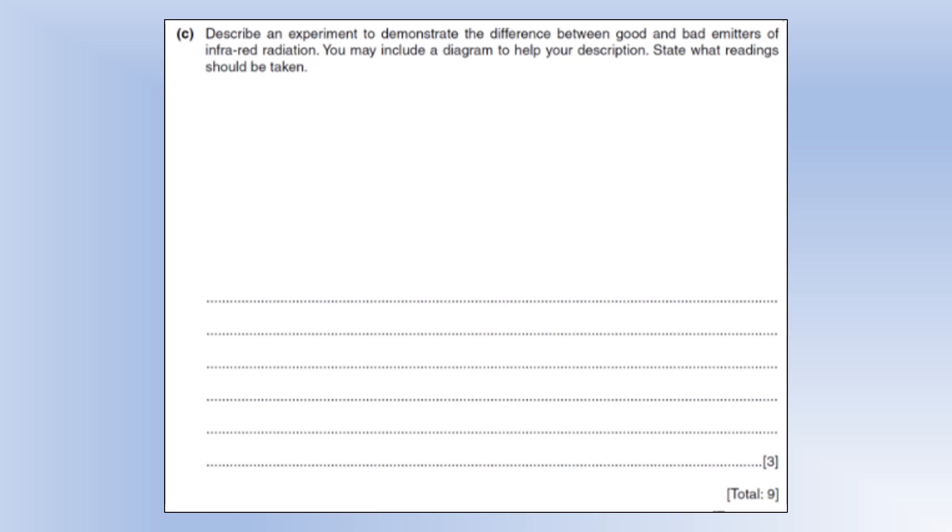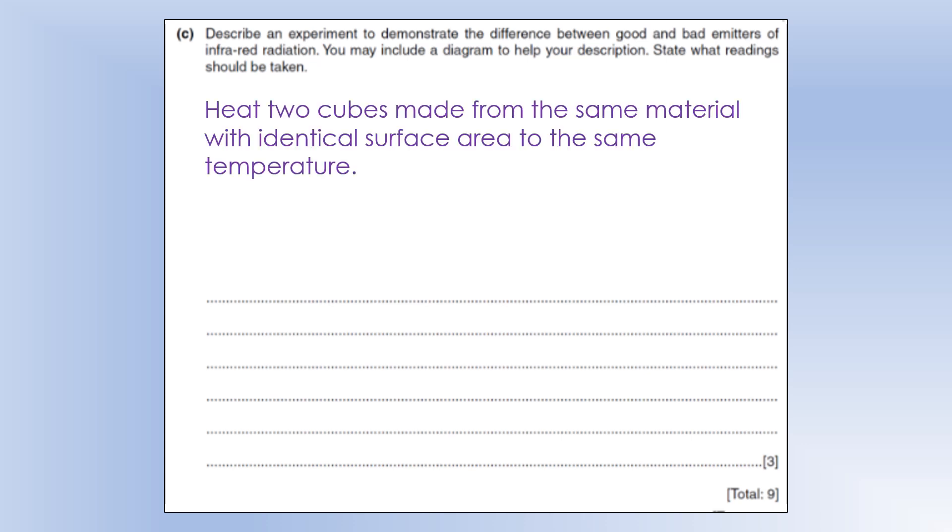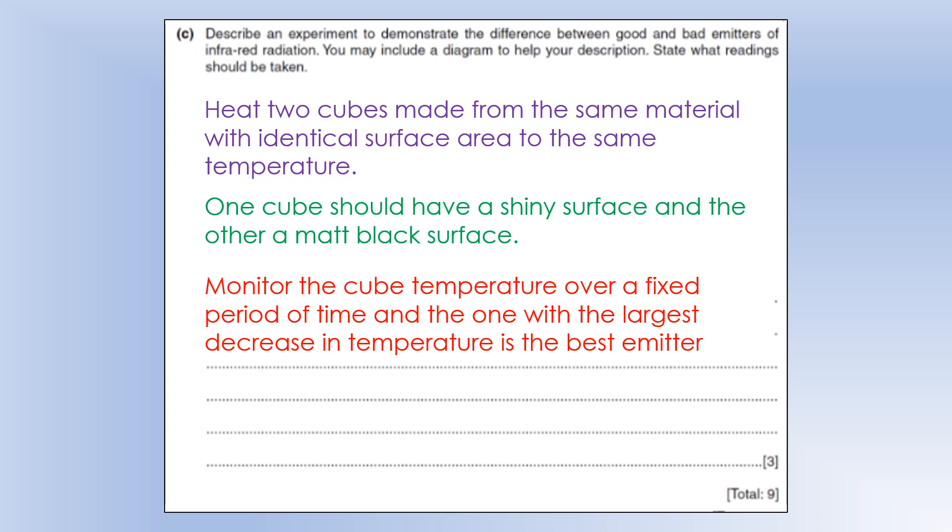Okay, so we want to describe an experiment to demonstrate the difference between good and bad emitters of infrared radiation. You may include a diagram to help you with your description. State what reading should be taken. Okay, so I'm going to use two cubes to do this, and I'm going to make sure they're of the same material, they've got the same surface area, and they've been heated up to the same temperature. So that the only thing that is different about the two cubes is one is going to have a shiny surface, and the other is going to have a matte black type surface. And then what I'd do is, I would leave them for a period of time, and at the end, the one with the largest decrease in temperature must be the best emitter of infrared radiation, because conduction and convection and all those other things would be the same, because the two cubes are identical. So that's how we would know which is the better emitter.